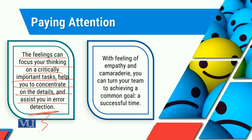Another important thing to understand is that with feelings of empathy and camaraderie, you can turn your team toward achieving a common goal and a successful outcome. We need to be careful about the relationship between individuals and create a team orientation, because without cooperation the result will be competition, which is definitely not our desired outcome.